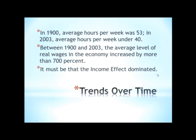We can also use this model not just to talk about an individual's static choice of how much labor to supply, but also to talk about trends over time. In 1900, the average worker worked 53 hours a week; in 2003, that number had fallen to just under 40. We can ask whether anything consistent with this model changed over that 100-year period. Real wages in the economy increased by more than 700%, so that budget constraint was getting steeper and steeper over time. Recall that an increase in the wage can lead to more or less leisure — so it must be that the income effect dominated for workers in the economy over that entire time period.